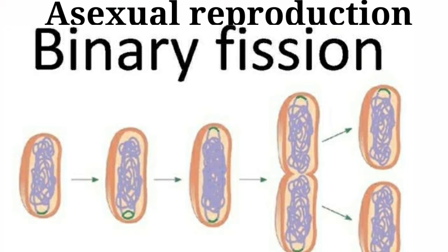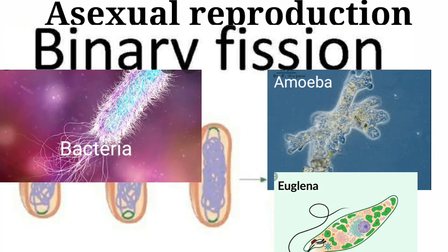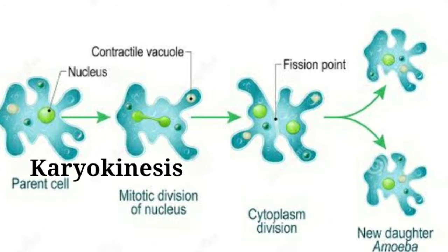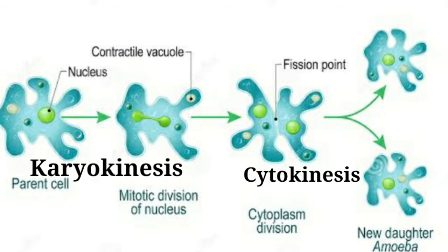Binary fission commonly occurs in bacteria, amoeba, euglena, and green algae. In binary fission, first the nucleus divides — called karyokinesis — followed by division of the cytoplasm, called cytokinesis. Exactly two daughter cells are formed, each having a nucleus. These daughter cells may separate from one another or remain attached for some time to form a chain.